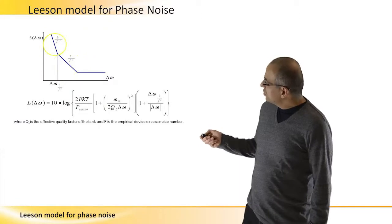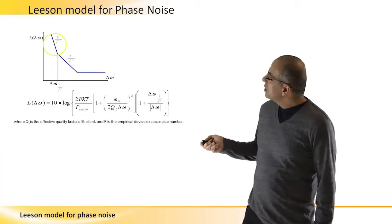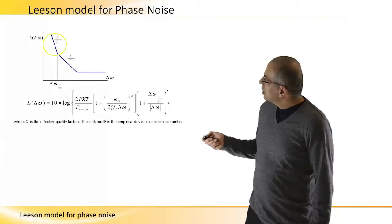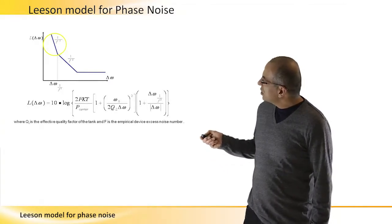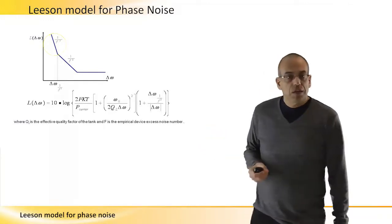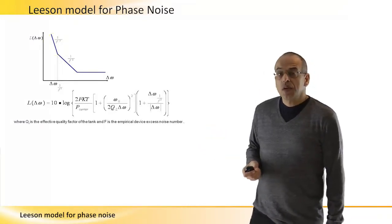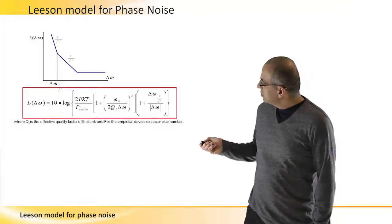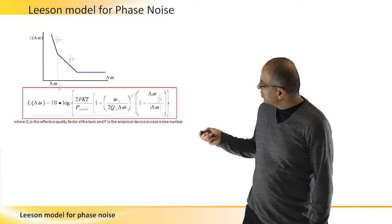When we get closer to the carrier, or when the delta w is very very small, the phase noise starts behaving like 1 over f to the third. So mathematically, the performance that we can see here graphically is described in this expression.